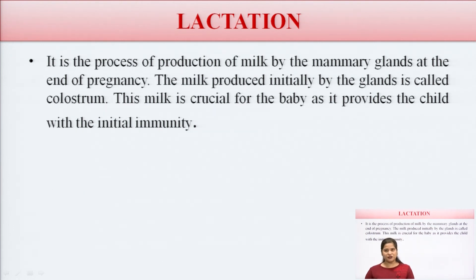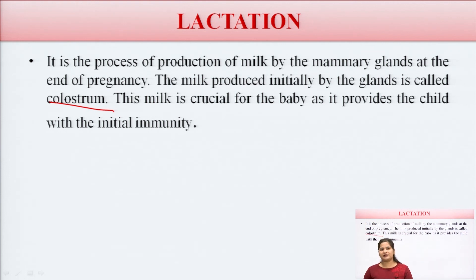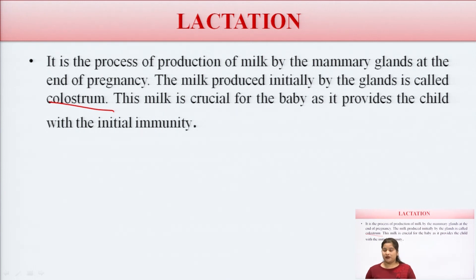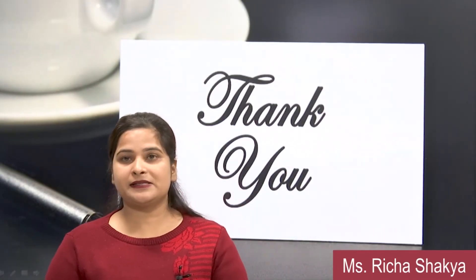Lactation is the production of milk by the mammary glands at the end of pregnancy. The milk produced initially by the glands is called colostrum, and it is crucial for the baby as it provides the child with initial immunity. The first 6 months of breastfeeding provide immunity to the child. Lactation occurs in the postpartum period and is part of the fourth trimester.